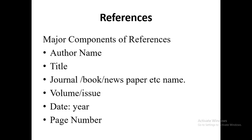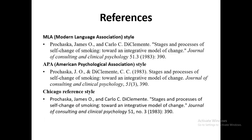References: at the end, you have to give the references cited in your introduction and literature review. Major content includes: author name, title, journal or book or newspaper name, volume, issue, date, and page number. You must be very systematic — whether you are using MLA, APA, or Chicago referencing style. You can use software like EndNote, which will help you a lot.